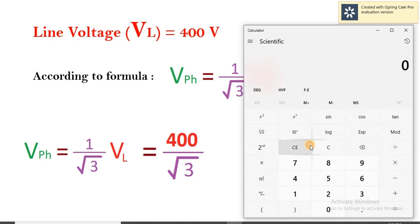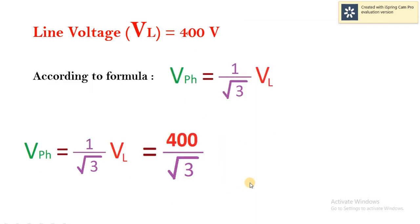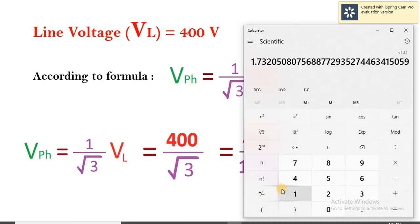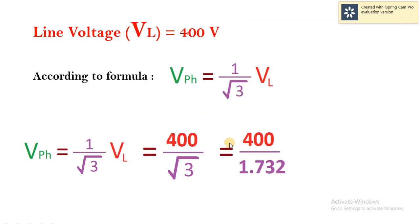Therefore, calculating the value of root 3. Root 3 equals 1.732. Substituting this value in the equation, we get 400 divided by 1.732. Now, calculating 400 divided by 1.732, the answer comes out to be 230.94 volts. That is the value of phase voltage.